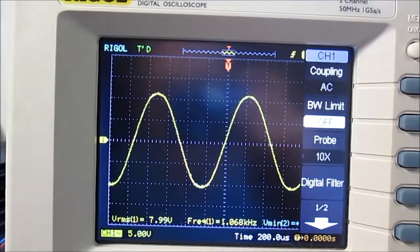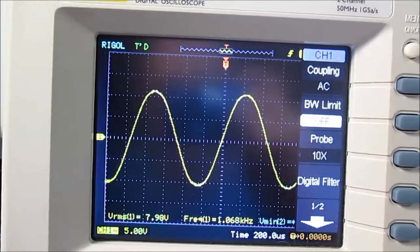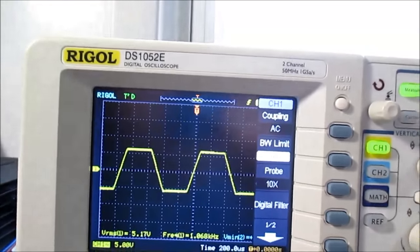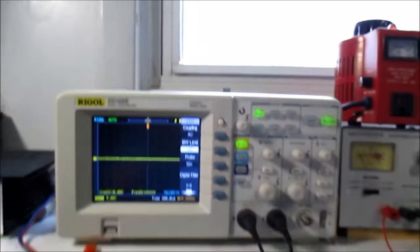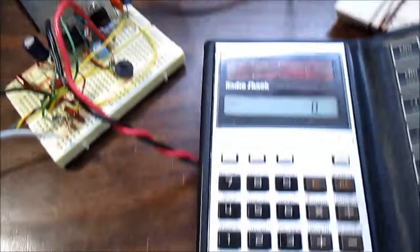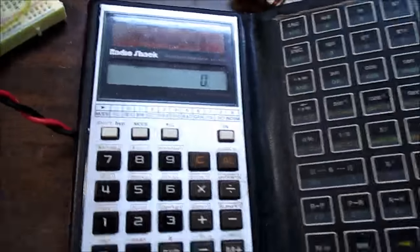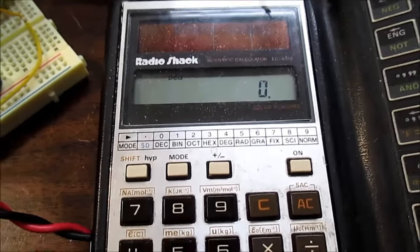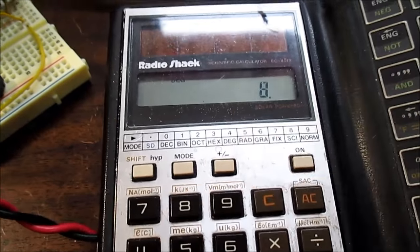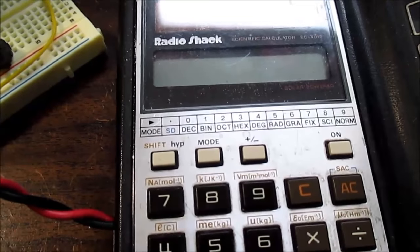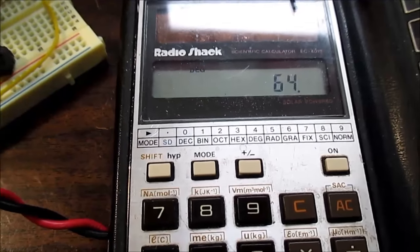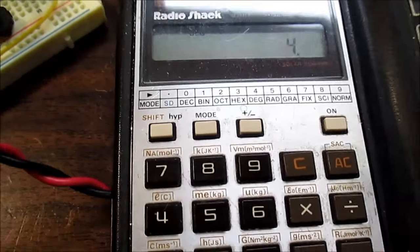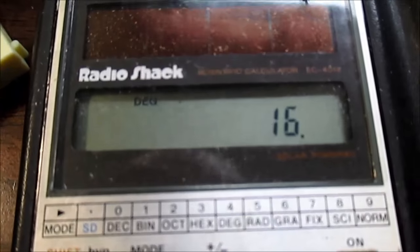And we're getting about 8 volts, 8 volts RMS. Now let's see how much better that is. Well, I already know what it is - it's 16 watts because of the math. It's 8 volts RMS squared divided by 4 ohm load, and that's 16 watts.